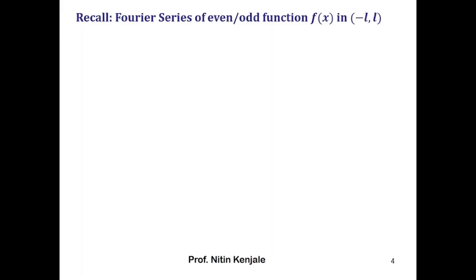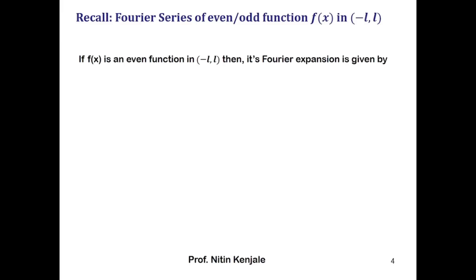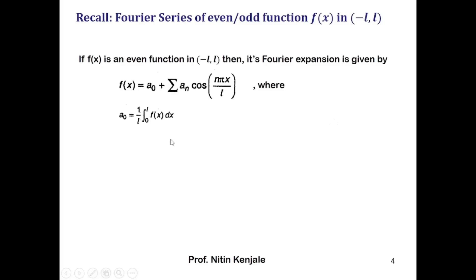In the interval minus l to l, if f of x is an even function, then its Fourier series expansion is given by f of x equals a naught plus summation a_n cos(nπx/l), where n varies from 1 to infinity. Here b_n takes value 0. The expressions are: a naught equals 1/l times the integral of f(x) dx over 0 to l.